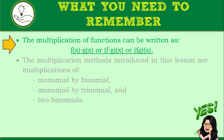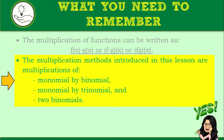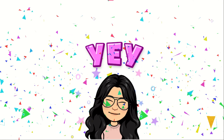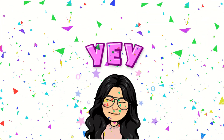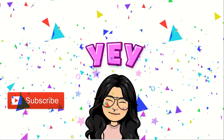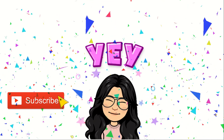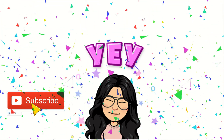What you need to remember: the multiplication of functions can be written as f times g of x. The multiplication methods introduced in this lesson are: a monomial multiplied to a binomial, a monomial multiplied to a trinomial, and two binomials. That ends Lesson 3.3 on Multiplication of Functions. Great job for today — keep it up! If you want more content about General Mathematics, do not forget to subscribe. See you in the next lesson.